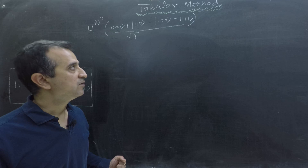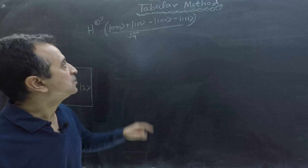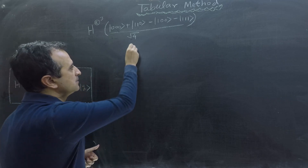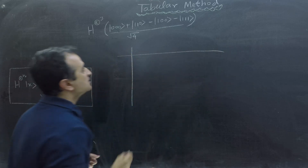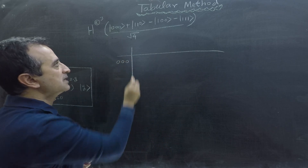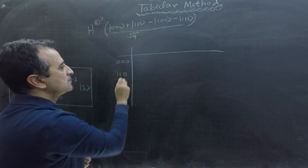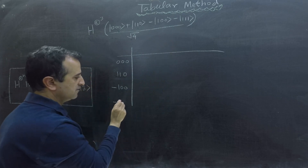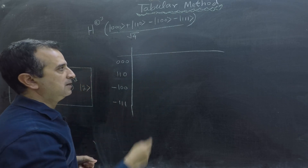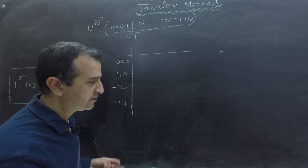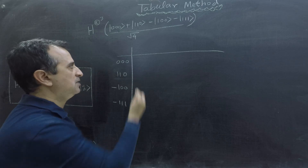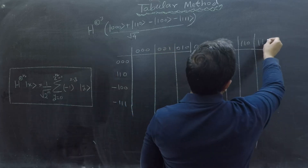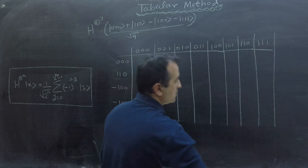My table will have four rows and 2 raised to the power 3 equals 8 columns. The columns represent all possible superpositions of three qubits: 0 0 0, 0 0 1, through 1 1 1.